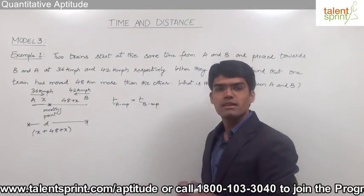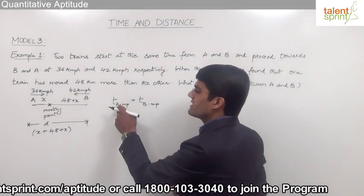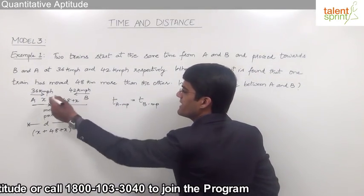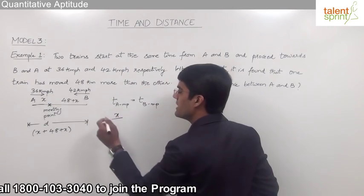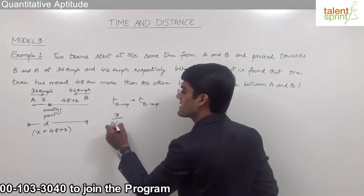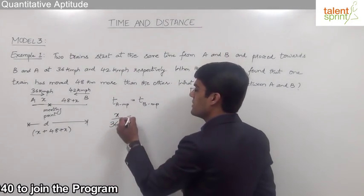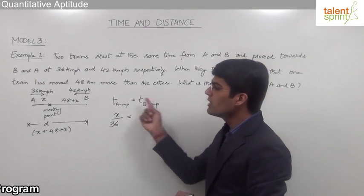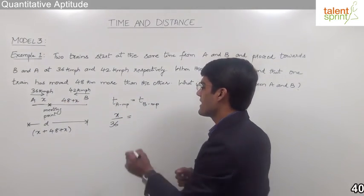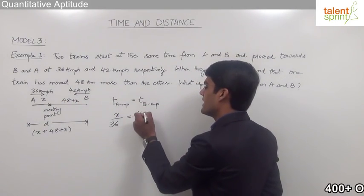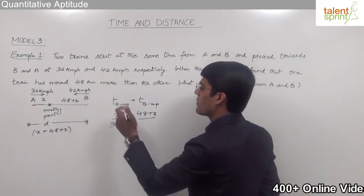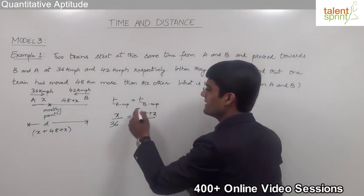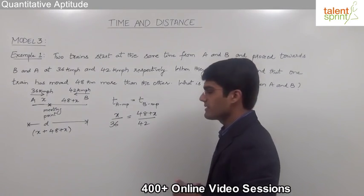Time is nothing but distance divided by speed. So the distance travelled by the first train from A to the meeting point, x, divided by its speed 36 km per hour, should be equal to the distance travelled by the second train from B to the meeting point, 48 plus x, divided by its speed 42 km per hour. By simplifying this equation we can get the value of x.